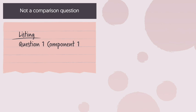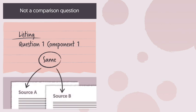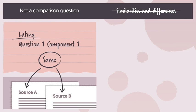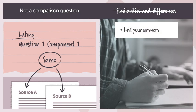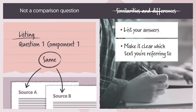What's important to recognize here is that this question is not a comparison question. So please don't make it harder for yourself. You're listing, like question one in component one. You're doing the same thing here, but on two texts. So this means you shouldn't be looking for similarities and differences between the texts. This skill doesn't appear until question six. Instead, just list your answers, while making it really clear which text you're referring to for each point.